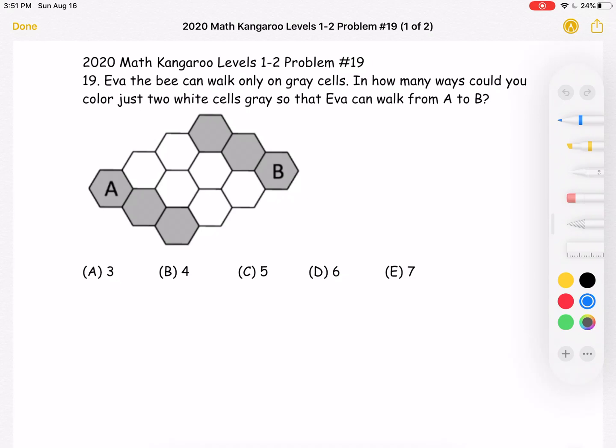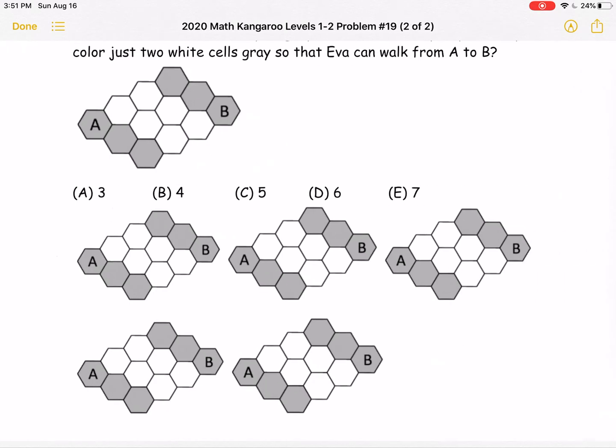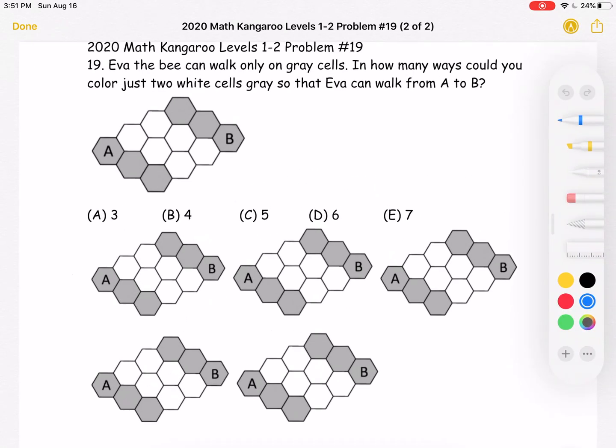This is the problem as it originally appeared on the test, and here is where we'll be doing the solution. The important parts of the problem are that Eva can only walk on gray cells, and that we're trying to figure out the number of ways that we can color just two white cells gray so that Eva can walk from A to B.